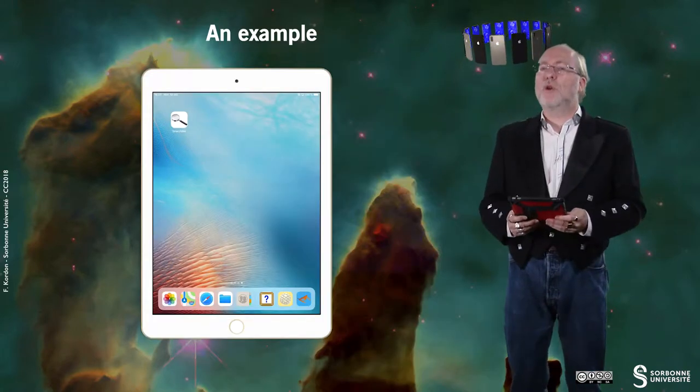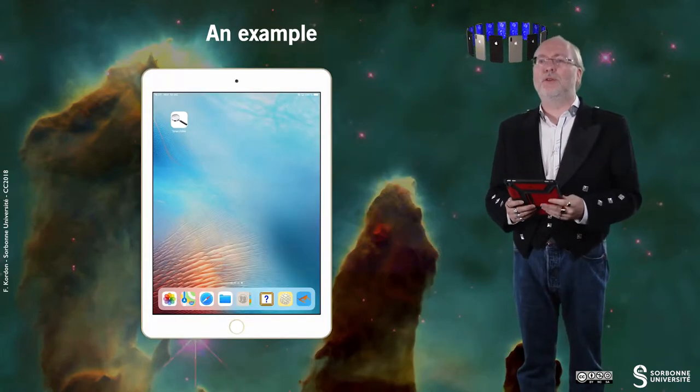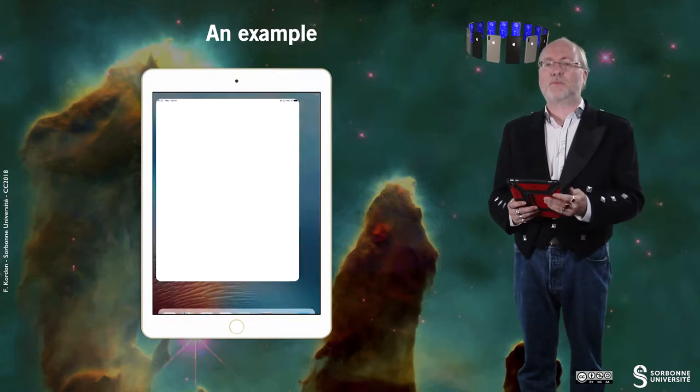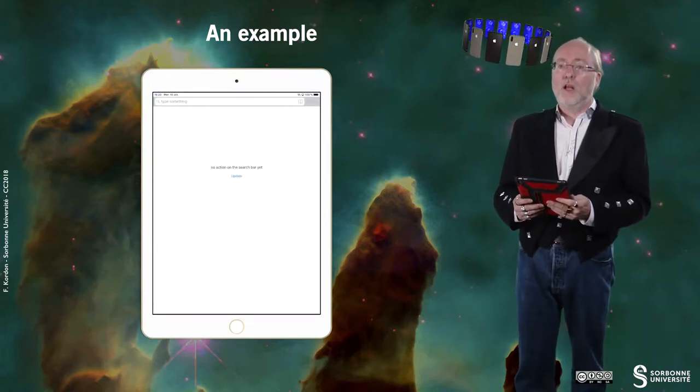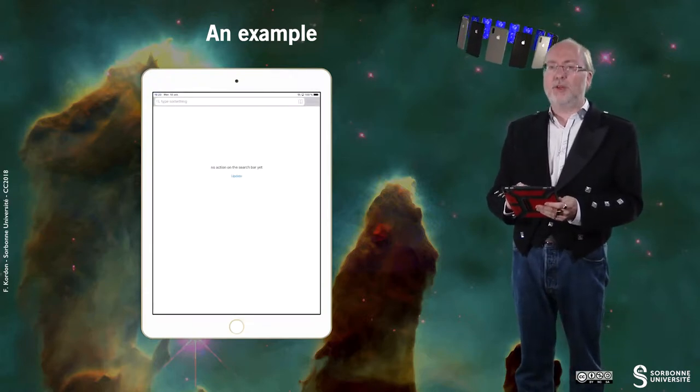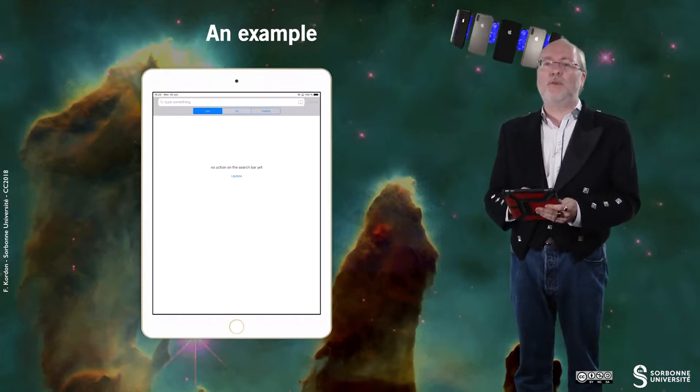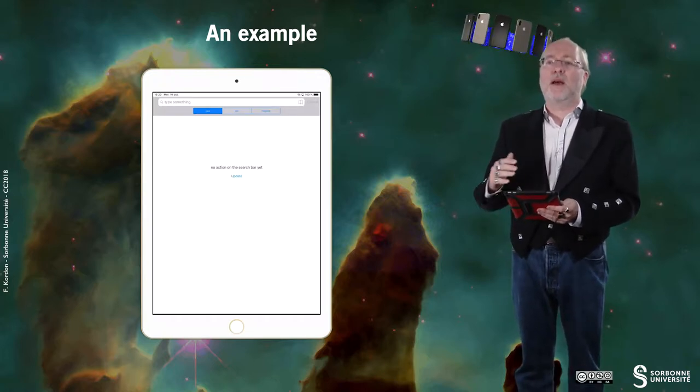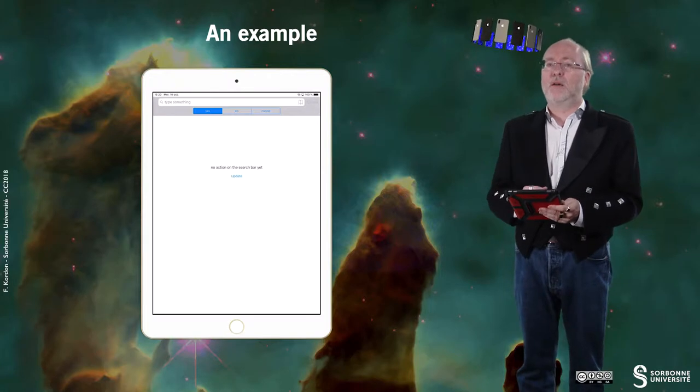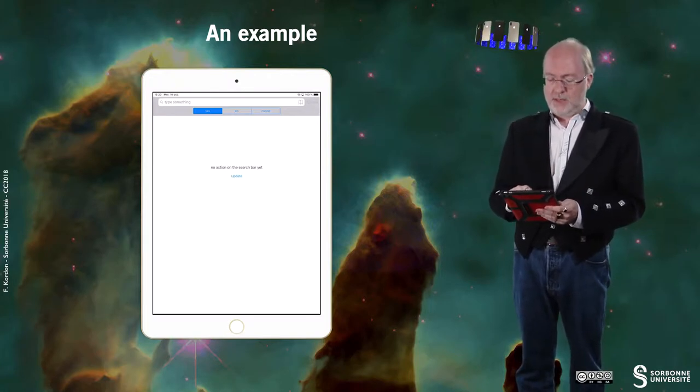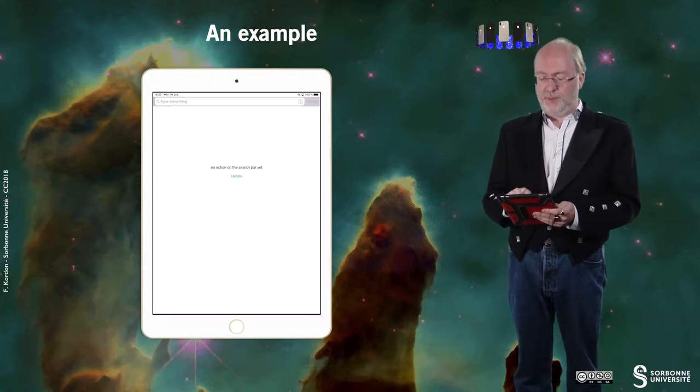So let's have a look on a small example. I'm running it on a large device. So basically I have an update button and if I tap the update button, then there is the scope bar of the UISearchBar that appears. If I tap it again, then it disappears.